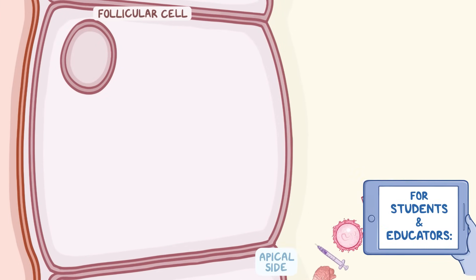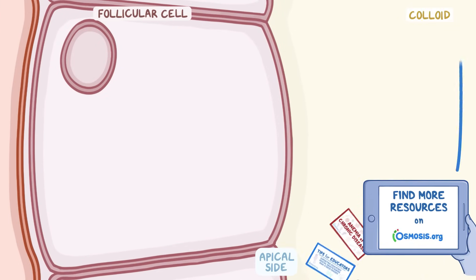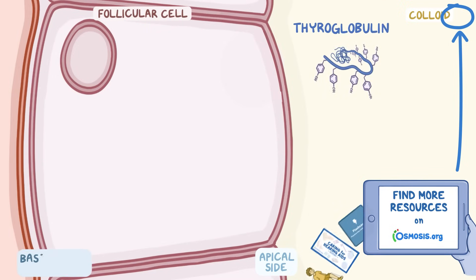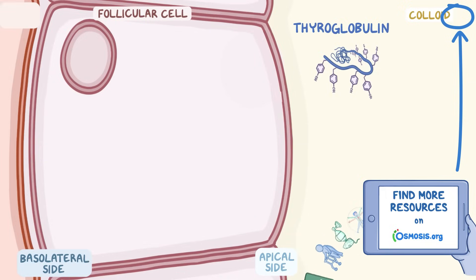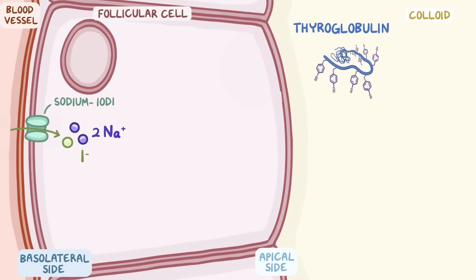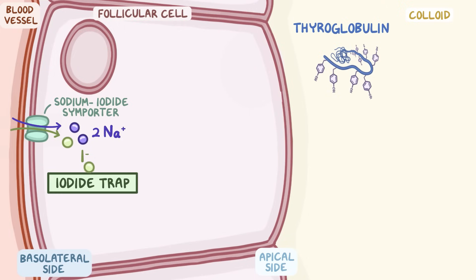Zooming further into these follicular cells, we'll see their apical side that surrounds a central lumen filled with a viscous fluid called the colloid. The colloid contains the precursor hormone, thyroglobulin. The basolateral side of follicular cells is in contact with blood vessels that supply these cells.